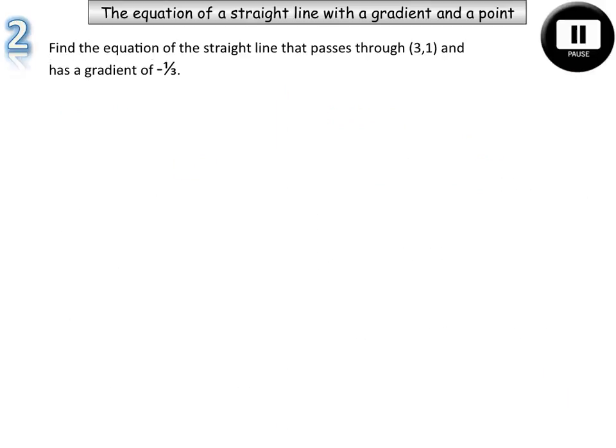Now this particular question has a gradient of negative one-third, so we've got a fraction. So this one is a little bit different. This method will be the same, y equals mx plus b. y equals negative one-third x plus b, and that's your gradient, so we substitute our m value into there.